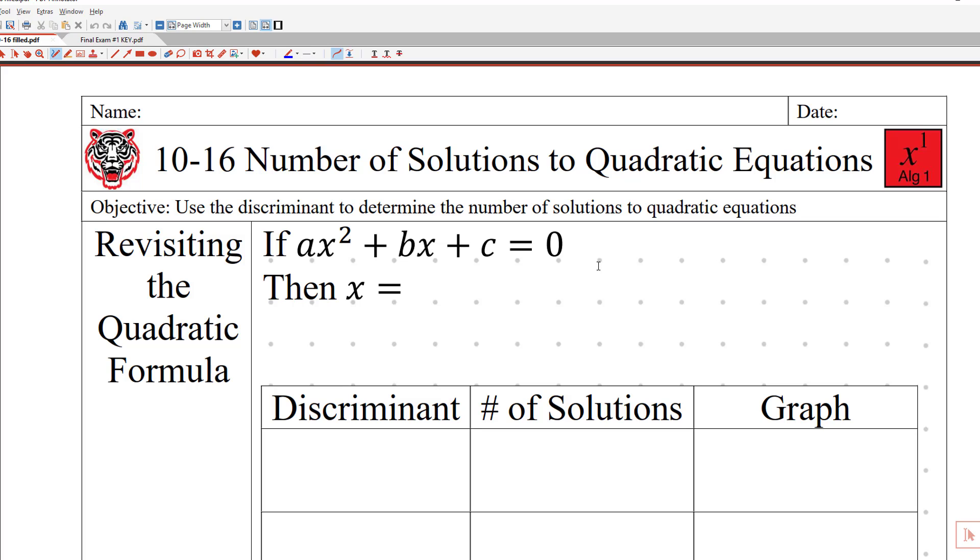This is Algebra 1 Lesson 10-16, Number of Solutions to Quadratic Equations. Today's date is Thursday, April 30th, 2020. Our objective today is to use the discriminant to determine the number of solutions to quadratic equations. So because we don't really know what this word discriminant means, let's talk about it first.